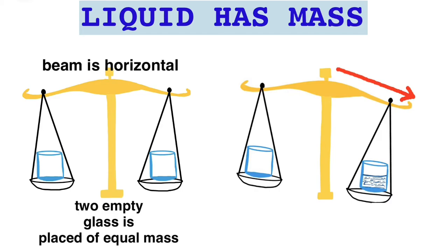This is because after putting the water in the right pan it becomes heavier than the left side pan which has only the empty glass. The increase in the mass of the glass on the right pan is due to the water. Thus this experiment proves that liquid has mass.